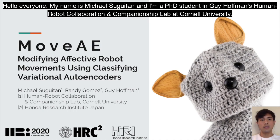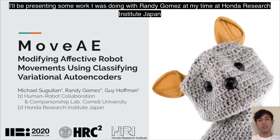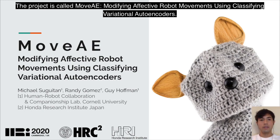Hello everyone, my name is Michael C. N. I am a PhD student in Guy Hoffman's Human-Robot Collaboration Companionship Lab at Cornell University. I'll be presenting some work I was doing with Randy Gomez at my time at Honda Research Institute in Japan, and the project is called MOVE-AE: Modifying Affective Robot Movements Using Classifying Operational Auto-Encoders.